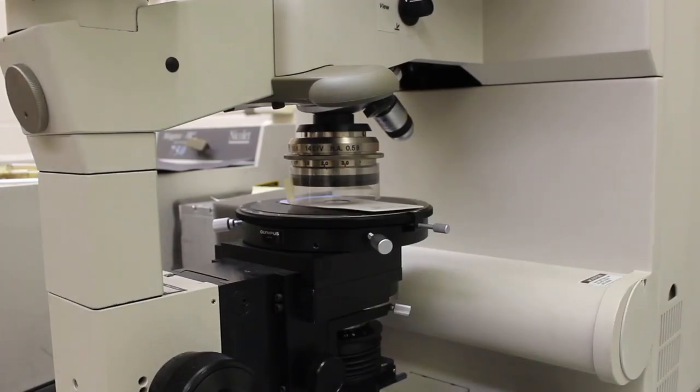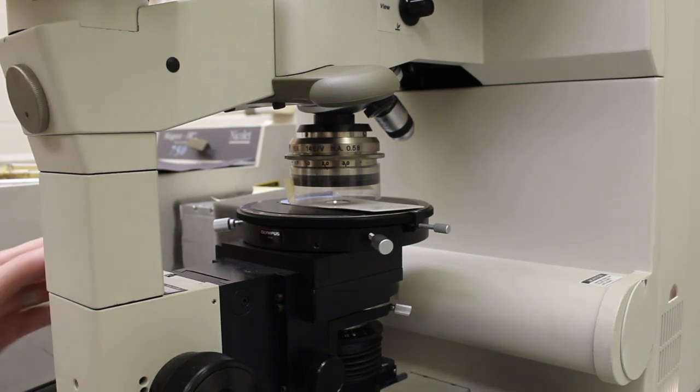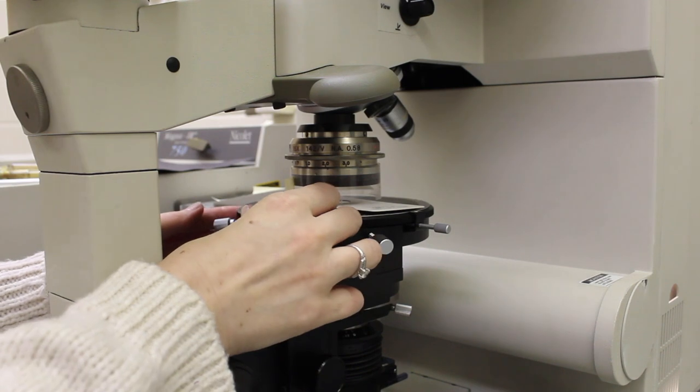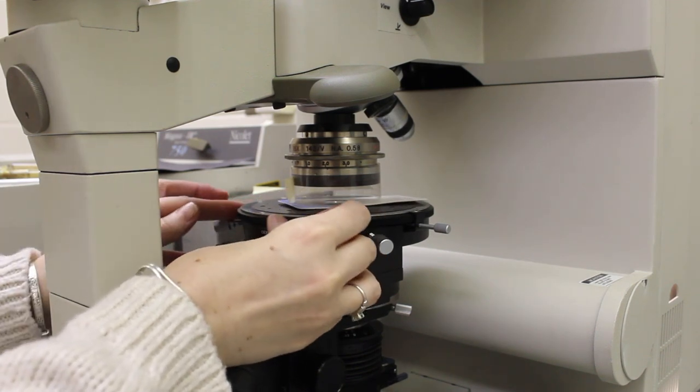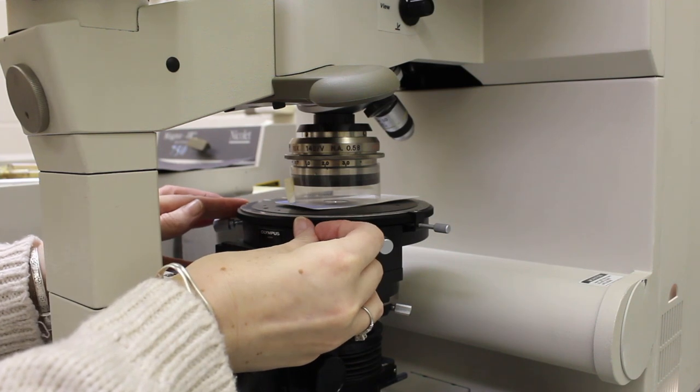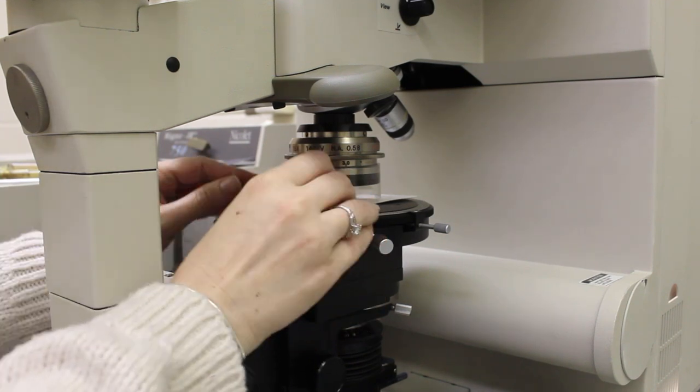In this video, we want to show how to focus on your sample on the FTIR microscope. First, place your sample on the stage and orient it in the direction that you wish to analyze the sample. This is especially important for polarized samples.